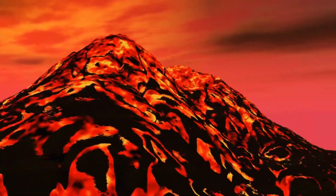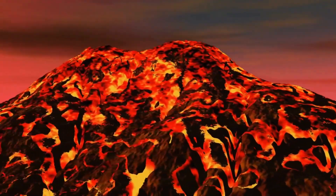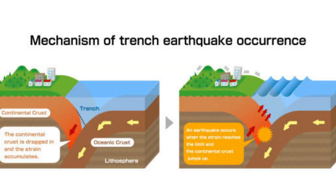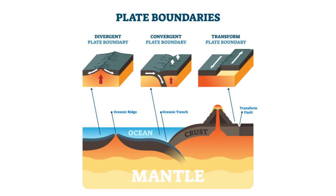A convection motion is established because viscous matter is heated from below and cooled from above. As we know, hot material expands, becomes less dense and therefore rises, while cold material gains in density, becomes heavier and sinks.